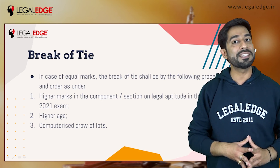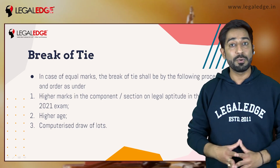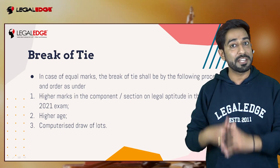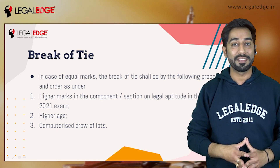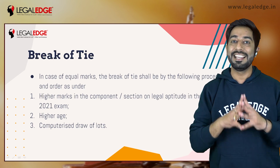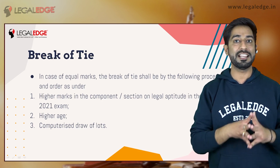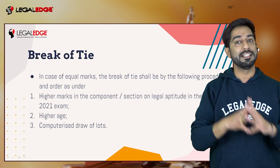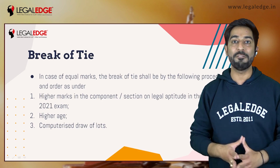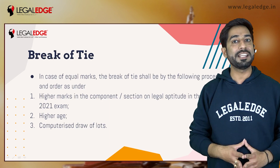If the legal aptitude section marks of both students are completely equal, then age is considered — the older student gets the admission over the younger one. If both students happen to be of the exact same age, which is very unlikely, then the names of the students are sorted alphabetically and the student whose name comes first gets the admission. This was the interesting break of tie rule followed by national law schools, and this covers all the eligibility criteria for CLAT.